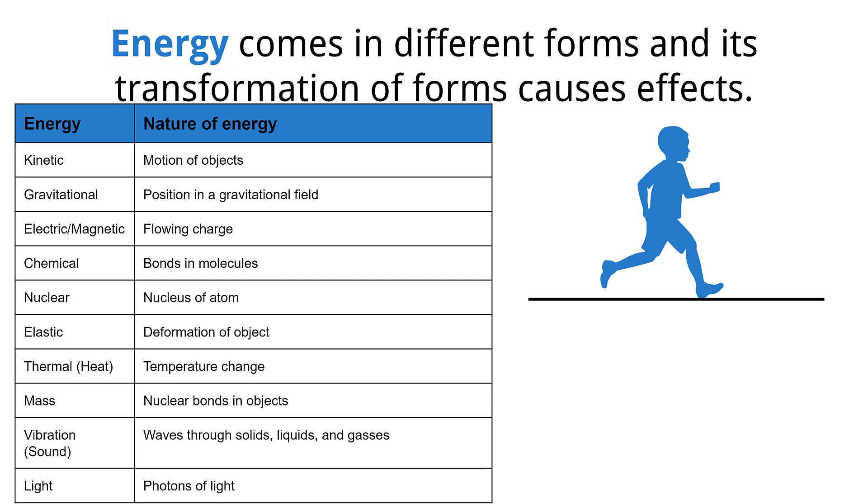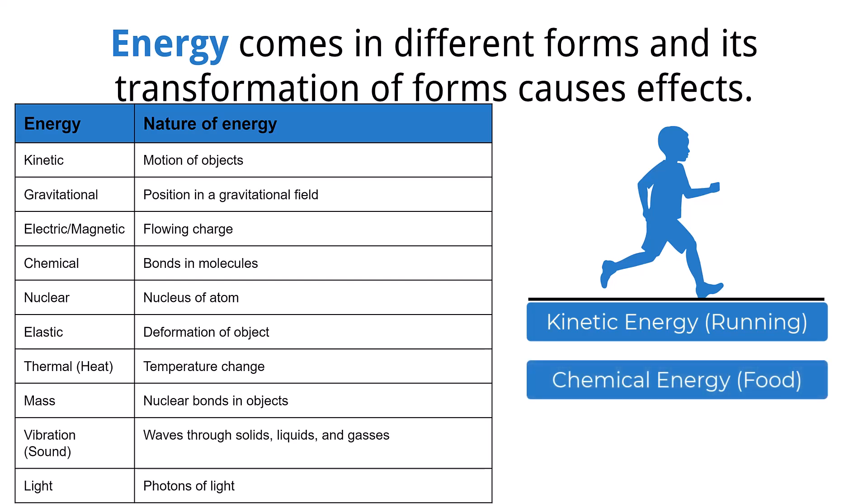For example, consider a person running. The person is considered to have kinetic energy because the person is moving. However, where did the energy to move that person come from? The person is using the chemical energy from previously consumed food as a source of energy for their movement. Then where does the food get its energy from? Food sources like plants use the energy from light and the process of photosynthesis to generate the chemical energy that is then consumed by the human.